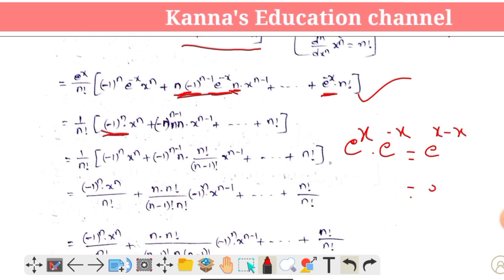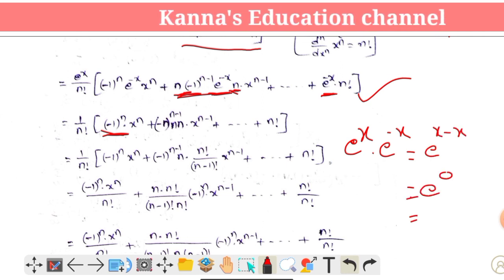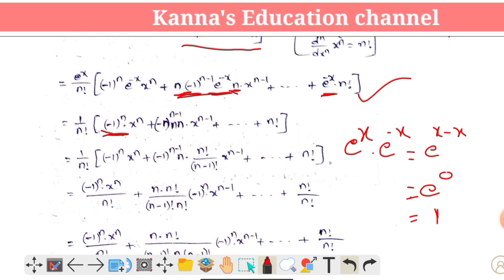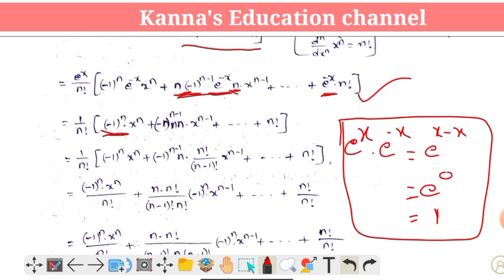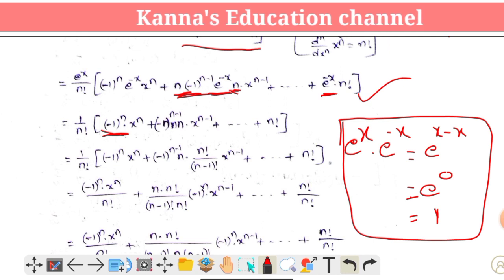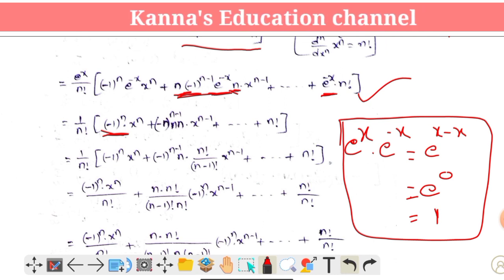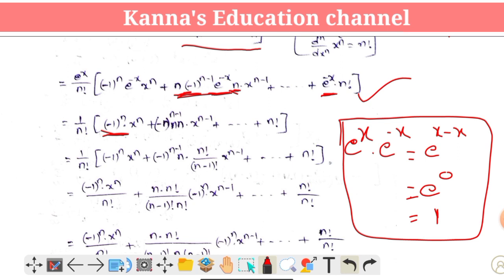e^0 — anything to the power 0 gives value 1. So e^x times e^(-x) times e^x simplifies.